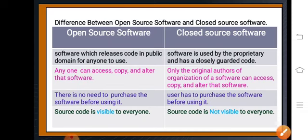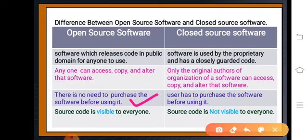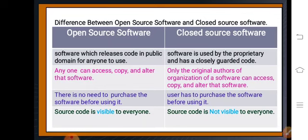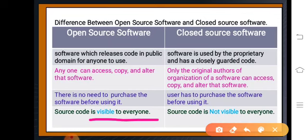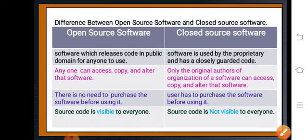Third difference: in open source software, there is no need to purchase the software before using it — there is no requirement for purchasing open source software. But in closed source software, the user has to purchase the closed source software before using it. Additionally, in open source software, the source code is visible to everyone. This is the difference between open source software and closed source software.